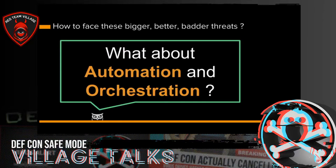Facing these challenges, we think about automation and orchestration. A quick reminder of my definitions: automation is setting a single step or single task to run; orchestration is about automating many things at once — it's about the coordination and management of automated tasks.